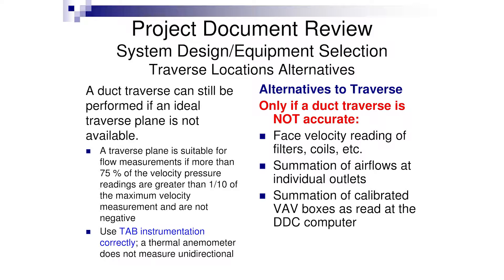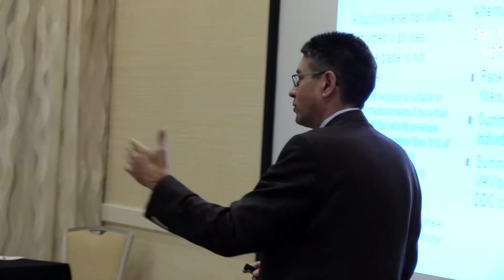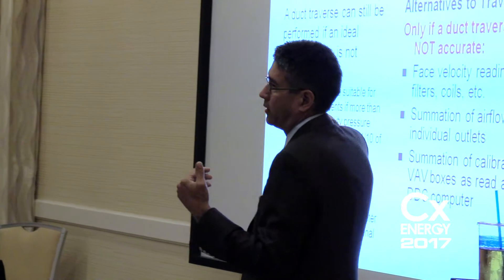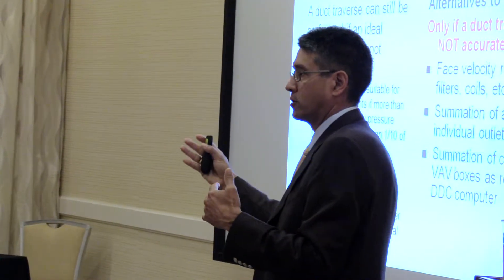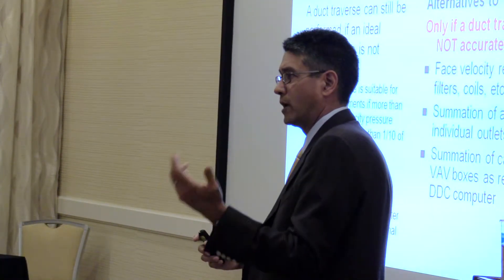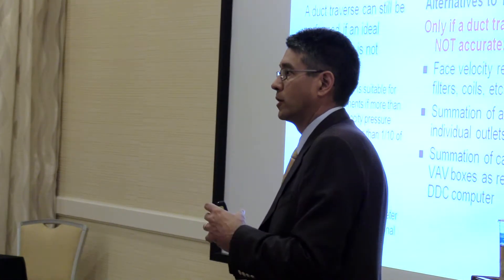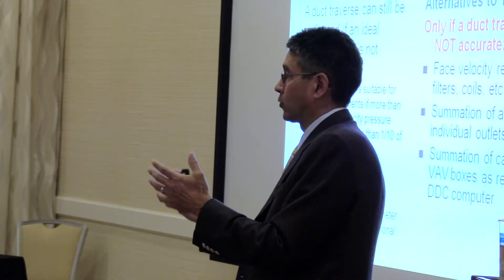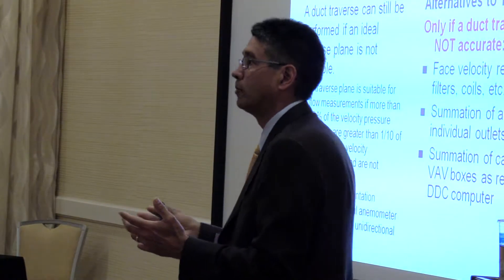On duct traverse, even if we don't have that ideal traverse plane, it's tough to say a poor traverse is better than no traverse at all, but we would still love to take one. AABC just published in their national standards that if your velocity profile is good — basically no zeros, no negatives, and within a tolerance on your velocity profile — you've got a pretty good duct traverse, even at three feet instead of six, with good laminar flow through the duct.